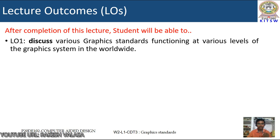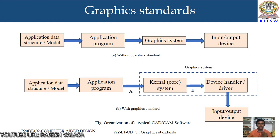Lecture outcome 1: discuss various graphic standards functioning at various levels of the graphic system worldwide. Here I am showing two different types of graphic standards. The first one is without graphic standard, the second one is with graphic standard. Without graphic standard has the following steps: application data structure or model, application program, graphic system, and input or output device. With graphic standard consists of the same steps, but in place of graphic system it consists of two parts: one is kernel system, second one is device handler or driver.